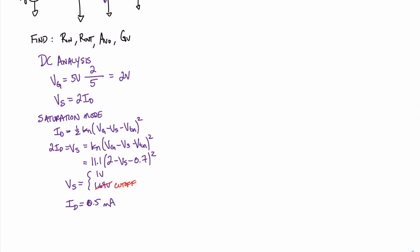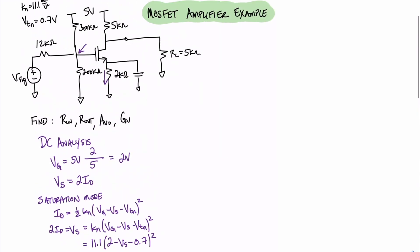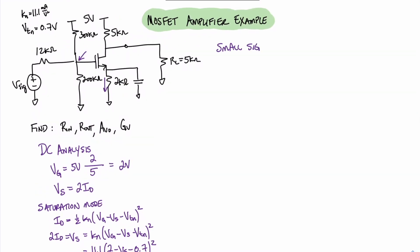One more DC value we want to find is the overvoltage. The overvoltage is 2 volts minus 1 volt minus 0.7 volts, which equals 0.3 volts. Now that we have the voltage at the source, the drain current, and the overvoltage, we can move on and find our small signal parameters. We just need to find one parameter, and that is our value of gm.